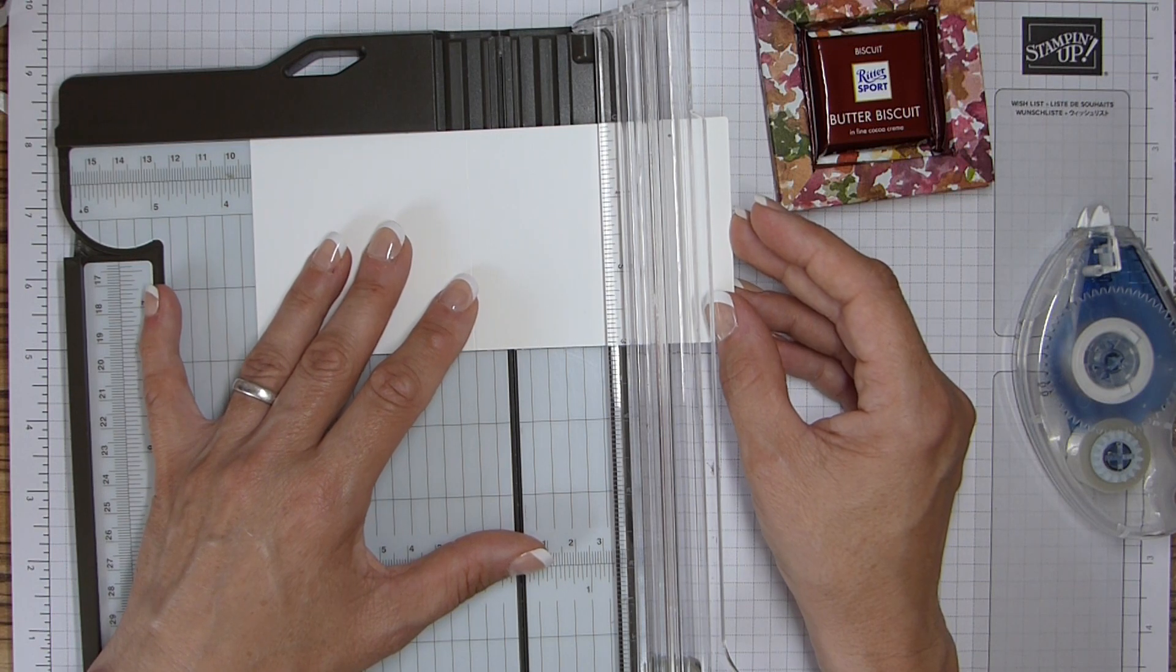So you need a piece of cardstock that is 3 by 6 and 11 sixteenths or 7 and a half by 16.9. We are then going to either do my easy way which is to pop the square on and mark, or I do have the measurements. So alternatively you can score at 3 and 1 sixteenths, 7 and a half centimetres and 3 and 9 sixteenths, so 9.2 centimetres.